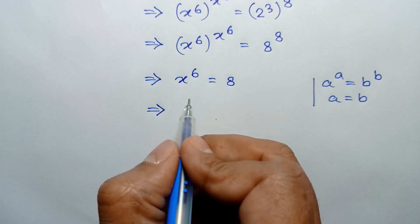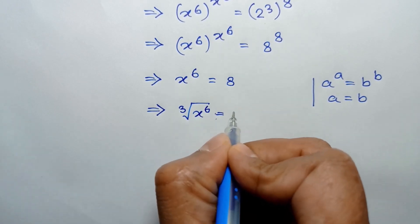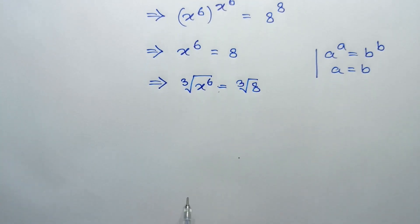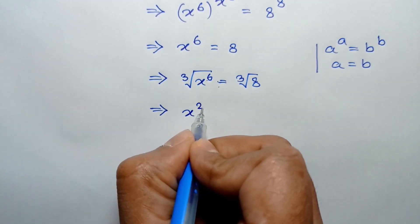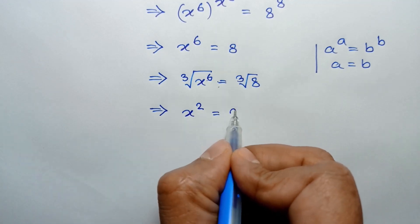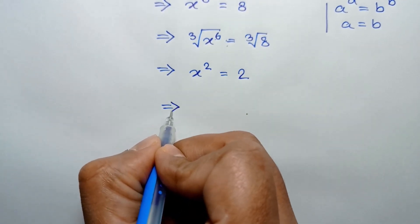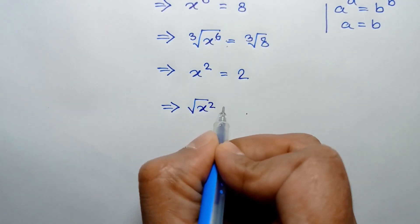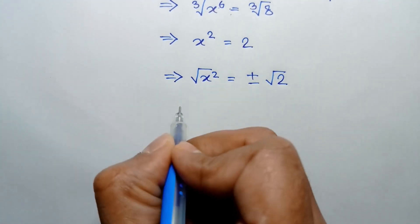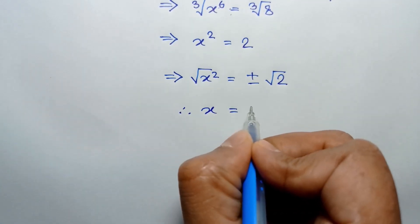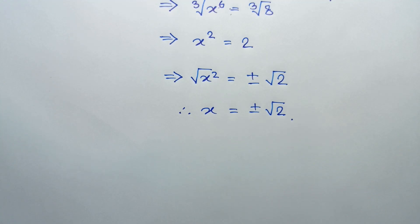Taking the cube root of both sides, we have the cube root of x to the power 6 is equal to the cube root of 8. Now, taking the square root of both sides, we can write the square root of x squared is equal to plus or minus the square root of 2. So the value of x is equal to plus or minus the square root of 2. These are the two real solutions of this equation.